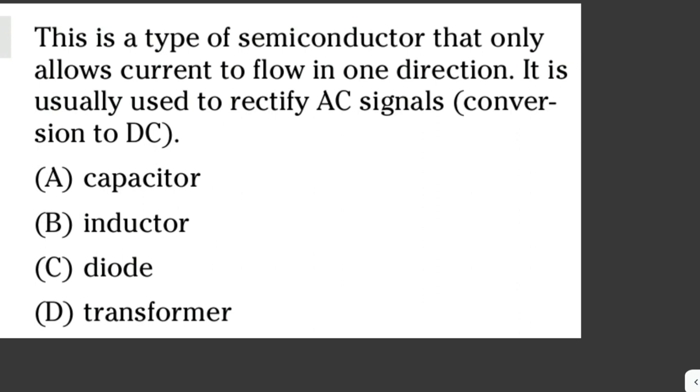This is a type of semiconductor that only allows current to flow in one direction. It is usually used to rectify AC signals, conversion to DC. So the answer here is letter C, the diode, because the diode restricts current flow to only one direction. The diode has two terminals, one is the anode and the other is a cathode. That's why it is called a diode.